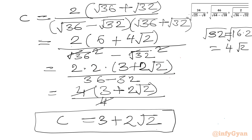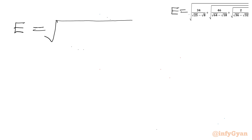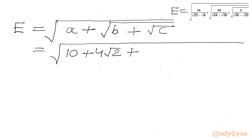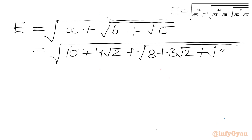Now we have to apply all three values to our expression E. So E equals √A plus √B plus √C, where A was 10 plus 4√2, B was 8 plus 3√2, and C was 3 plus 2√2.